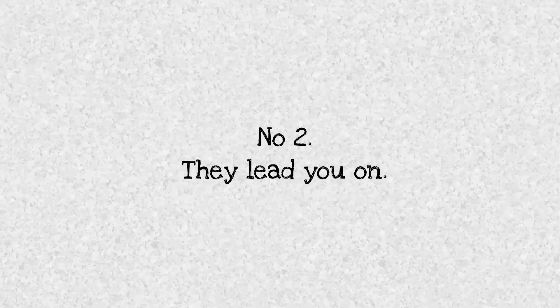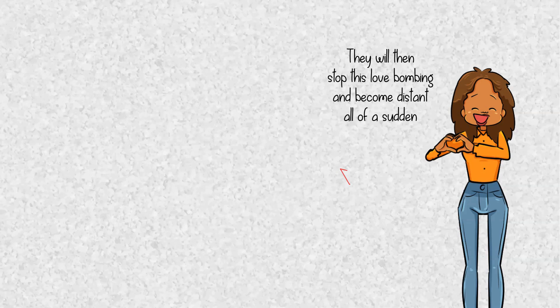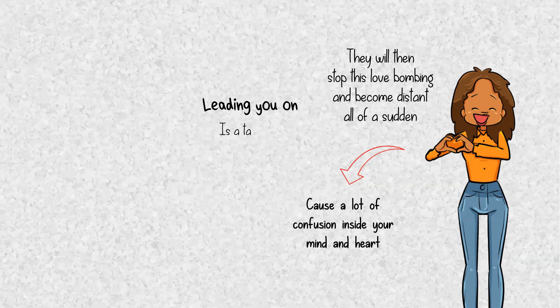Number two. They lead you on. One thing that evil people often do to manipulate you is to bomb you with love. However, they will then stop this love bombing and become distant all of a sudden. And this will cause a lot of confusion inside your mind and heart. Leading you on is a tactic that evil people do to get your attention.